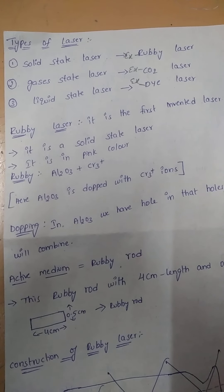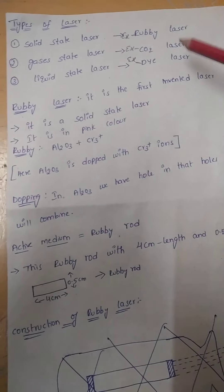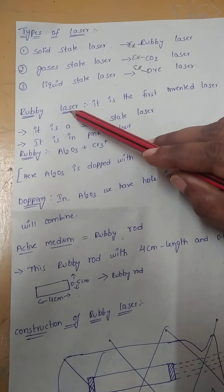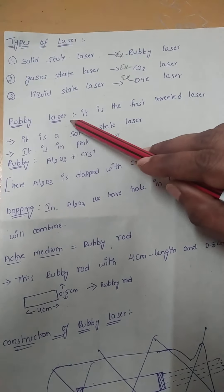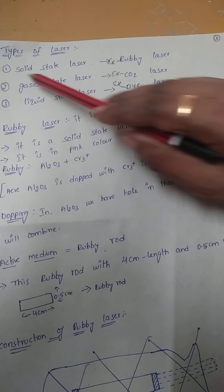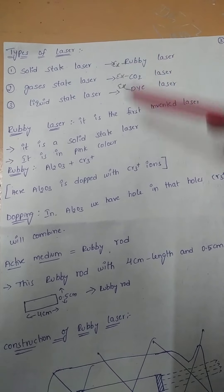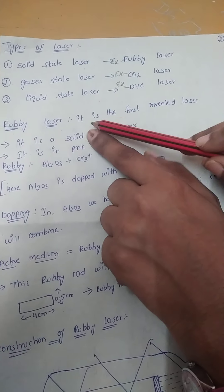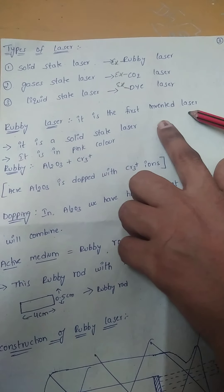Now we will discuss about these lasers. First we will discuss about ruby laser. Ruby laser is a solid state laser and it is the first invented laser.